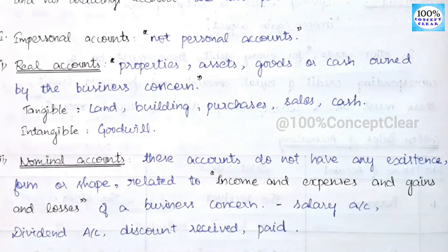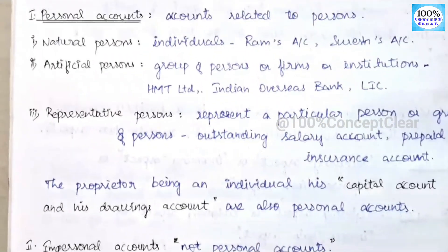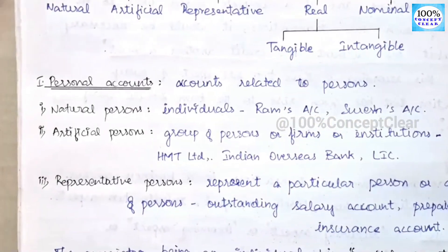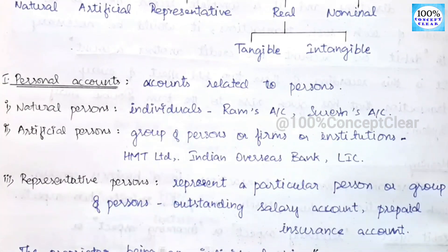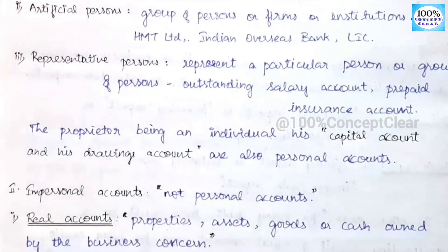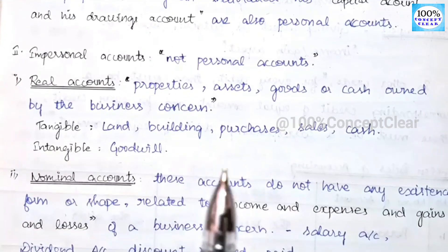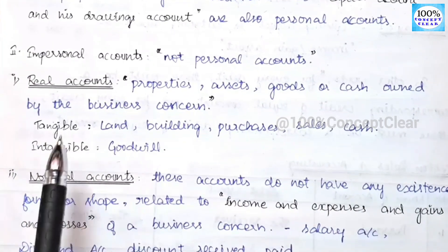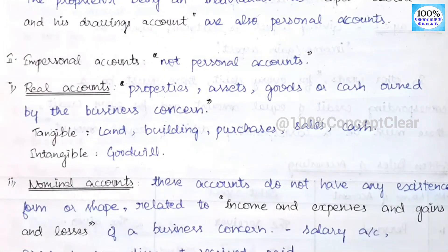So this is the classification of accounts — we have three categories: personal account, real account, and nominal account. Personal account is covered, and the impersonal account includes real account and nominal account.